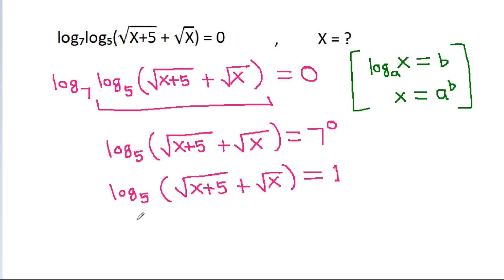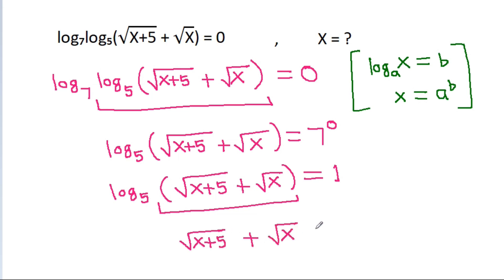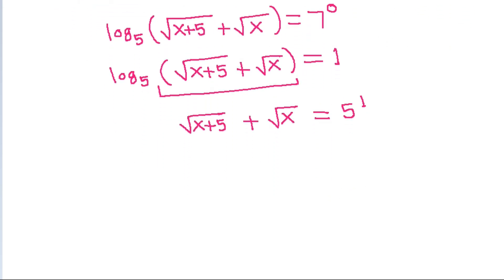Now we have log base 5 of this equal to 1. So square root of (x plus 5) plus square root of x will be equal to 5 to the power 1, which is 5. So square root of (x plus 5) plus square root of x equals 5 minus square root of x.